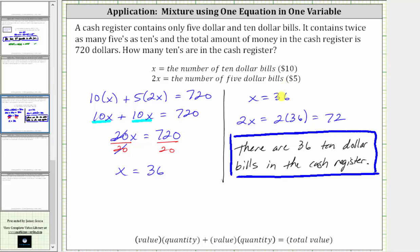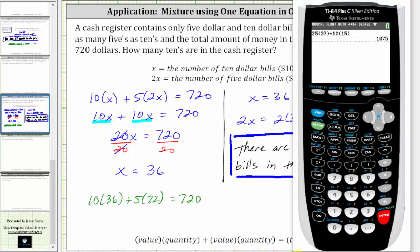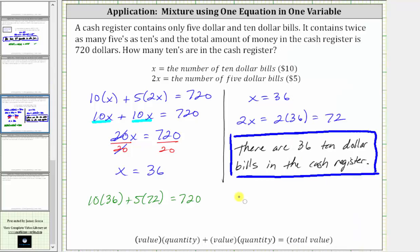Before we go though, let's verify. If we have 36 $10 bills and 72 $5 bills, the value is $720. So let's verify that $10 times 36, plus $5 times 72 does equal $720. And notice it does, verifying our solution is correct.